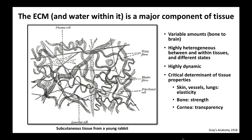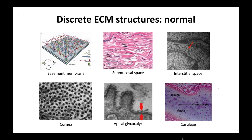I'll give you a couple of examples. The elasticity of your skin, your vessels, and your lungs is determined by the extracellular matrix. The strength of your bones is determined by bone matrix. Even in the cornea, the transparency is completely dependent on matrix organization. So the ECM is really very important in determining tissue properties.